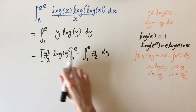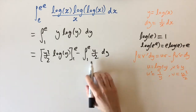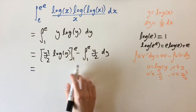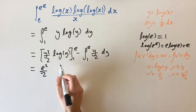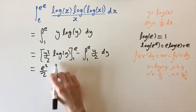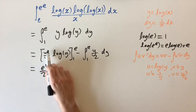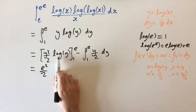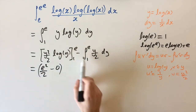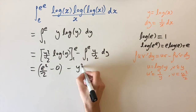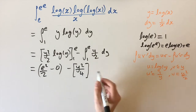Now we have a term we can evaluate and a simple polynomial integral. Putting in the limits: e squared over 2 times log e, which is 1, so just e squared over 2. Minus the lower limit: 1 squared over 2 times log 1, and log 1 is 0, so that's minus 0. Then integrating y over 2 gives minus y squared over 4, raising the power and dividing by the new power.